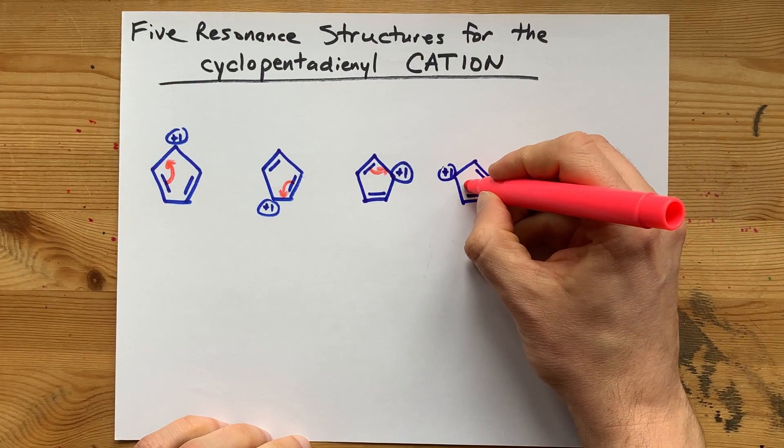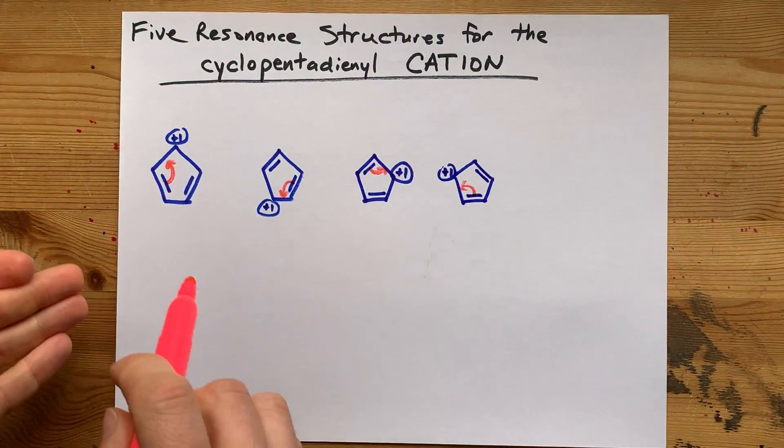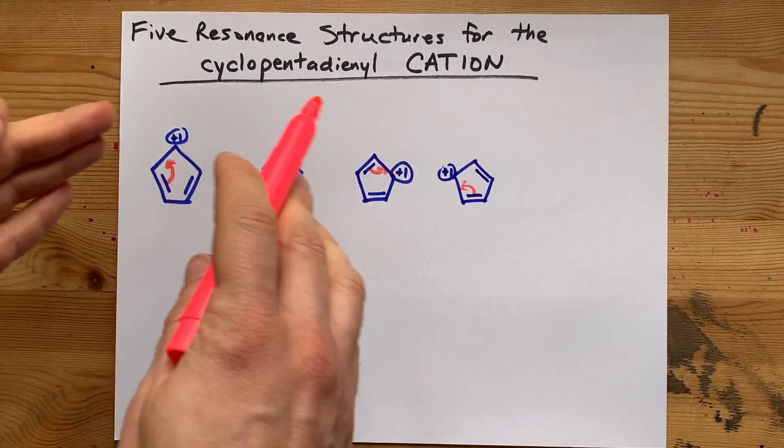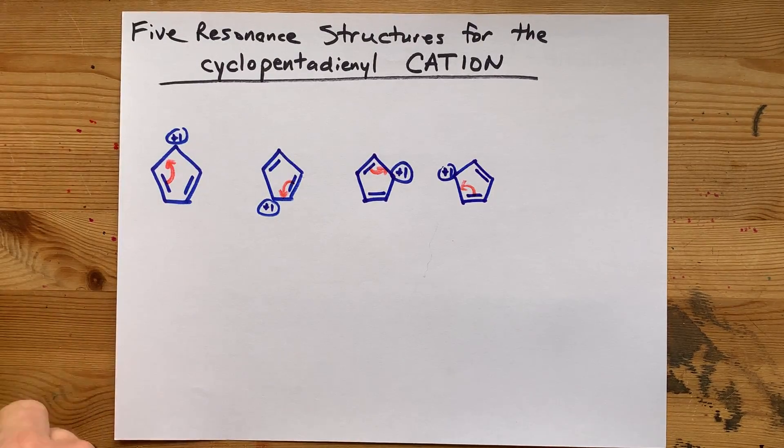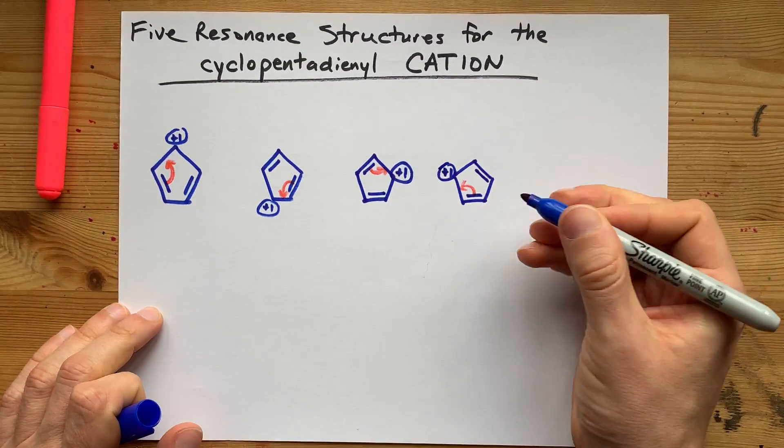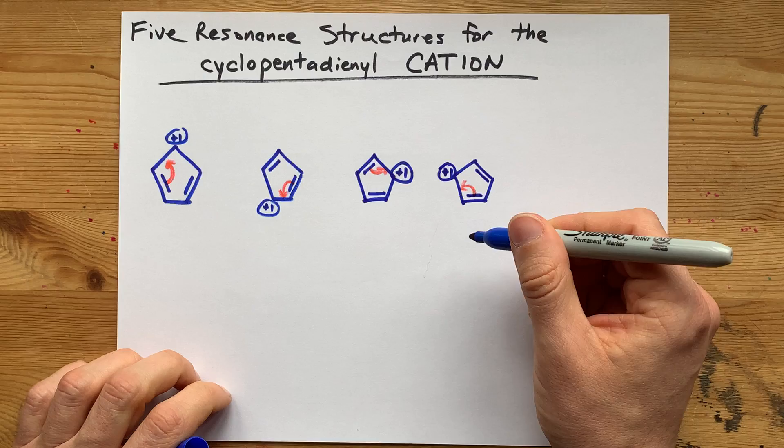And then lastly, perhaps we move that double bond around here. Please note that I'm trying to work my way in a pattern around the molecule slash ion, just so that there's some kind of system to what I'm doing here.